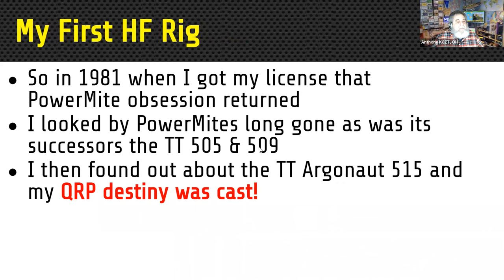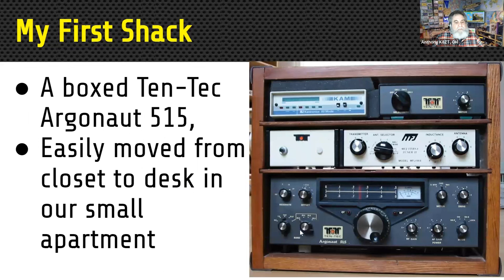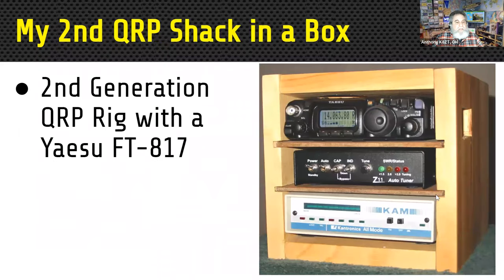My first radio when I got my license in 1981: the Power Mite obsession was still in the back of my head, but it was long gone. The Ten-Tec 505 and 509 were gone too, so I bought the Ten-Tec Argonaut 515 for just under $300 — I still have it and I'm never going to get rid of it. It still operates fine, putting out about two watts on both SSB and CW, covering 80 through 10 meters. Over the years I added extra filtering and accessories. For a number of years it was my full station in an apartment — I could pick it up, carry it to the operating table, plug it in, hook up the antenna, and operate. When done I'd put it back in the closet.